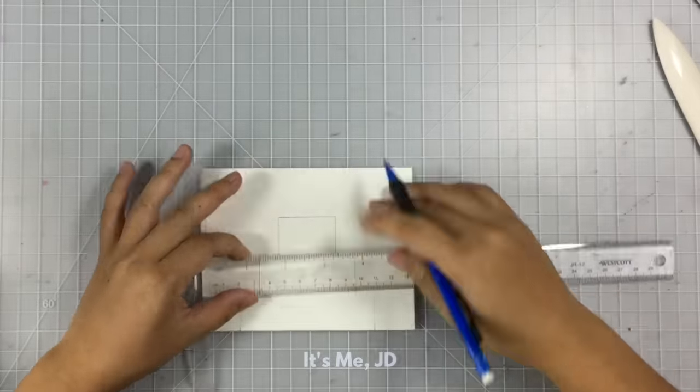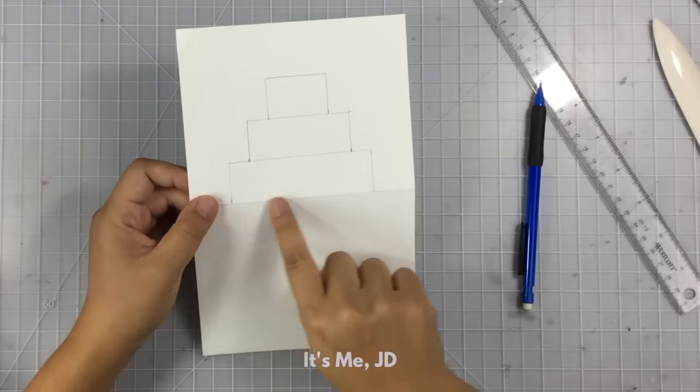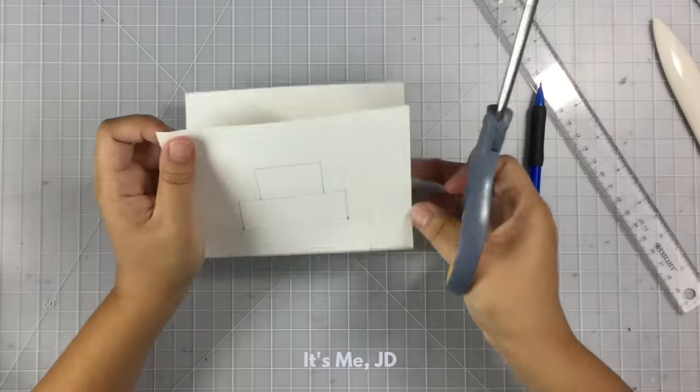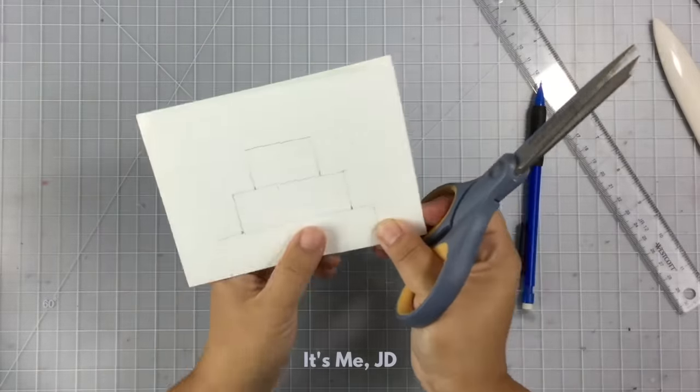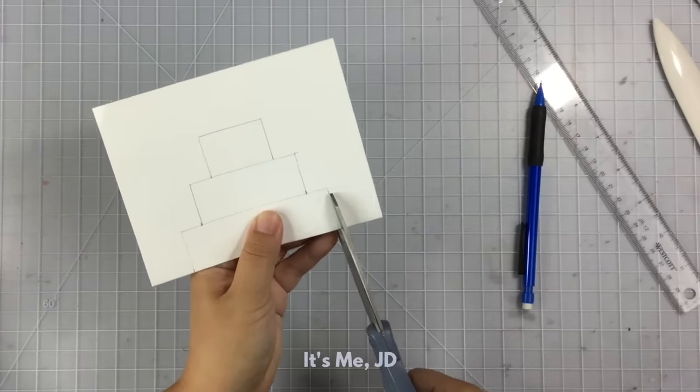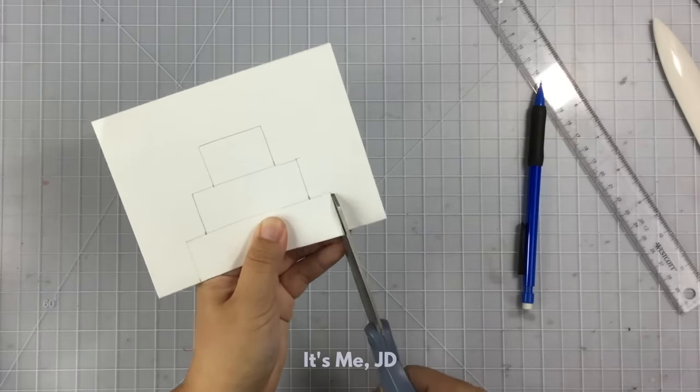Don't worry about all of these pencil marks we're making because this element will actually be on the inside. So now I'm going to cut out the pop-up cake. To do this, I'm cutting along the score lines. I'm just cutting the vertical lines of the cake only.